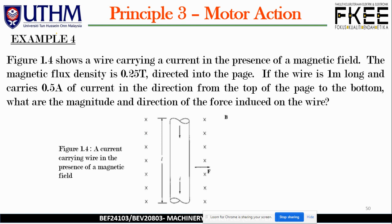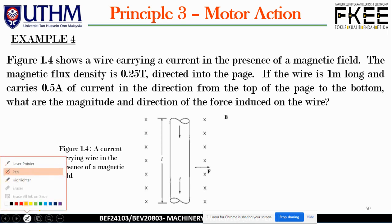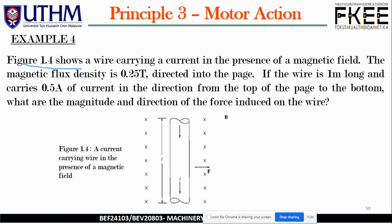Example 4: Figure 1.4 shows a wire carrying a current in the presence of a magnetic field. The magnetic flux density B is 0.25 Tesla directed into the page — indicated by the X symbol, meaning into the page. Conversely, a dot symbol means out of the page.